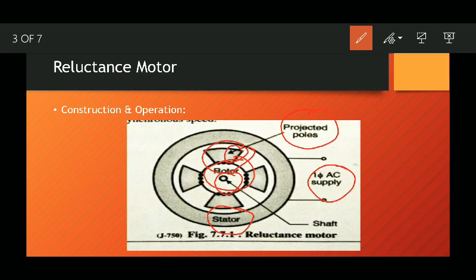Due to these projected poles, the air gap between the stator and rotor is non-uniform. Reluctance in the flow of flux is less where air gap is less, and reluctance to the flow of flux is more where air gap is more.